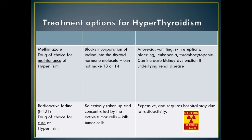The pancreas functions as both an exocrine and endocrine organ, responsible for releasing digestive enzymes as well as insulin and glucagon. These are made in the islets of Langerhans. Glucose is the energy source for normal cell function, and if glucose is not regulated properly it can alter bodily processes. Insulin normally inhibits breakdown of fat, protein, and glycogen into energy sources.